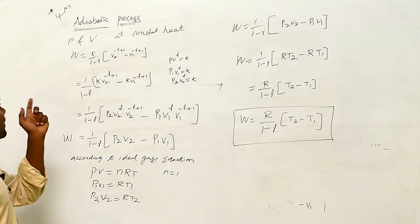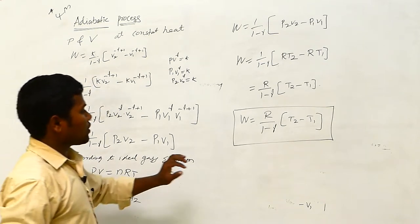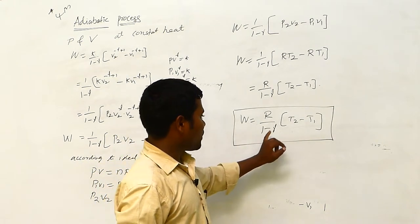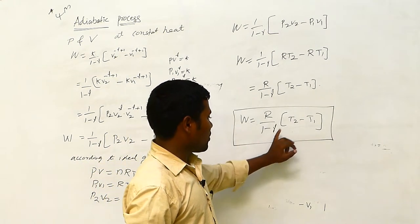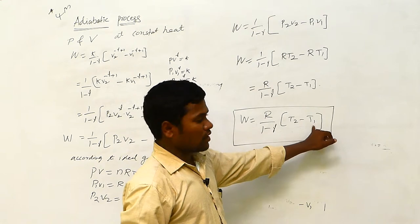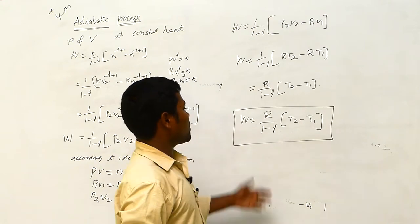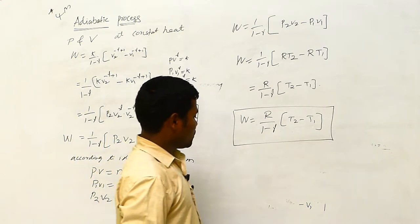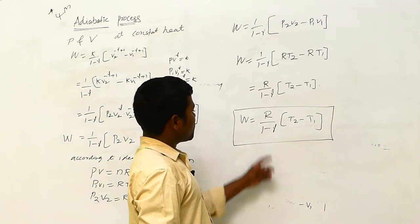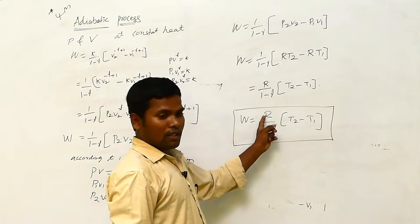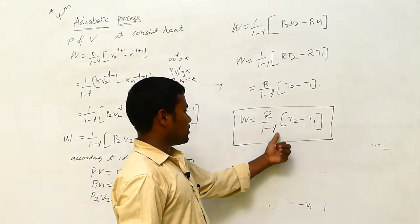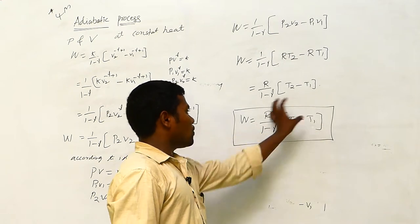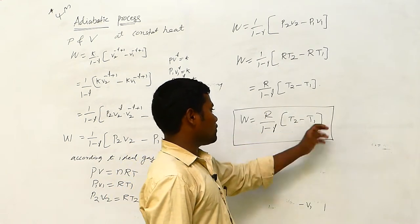The work done in the adiabatic process: the formula is W = R by (1 minus gamma) into (T2 minus T1). Based on this, they will simply give the temperatures T1 and T2. You will get the R value, and you can substitute gamma as well if you know all the values.